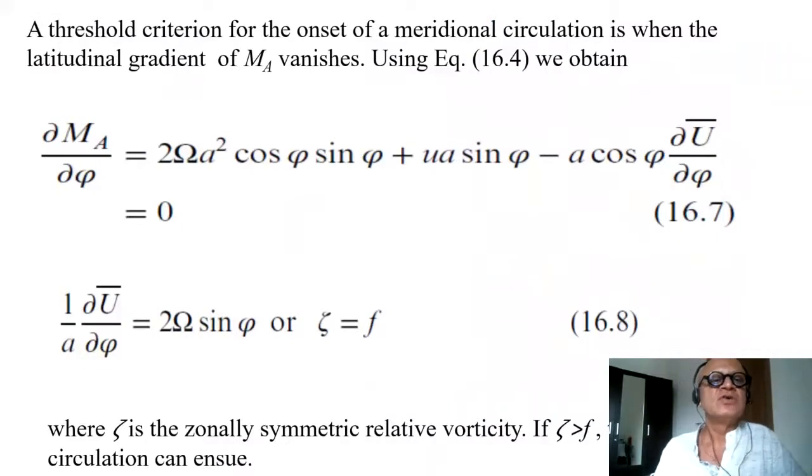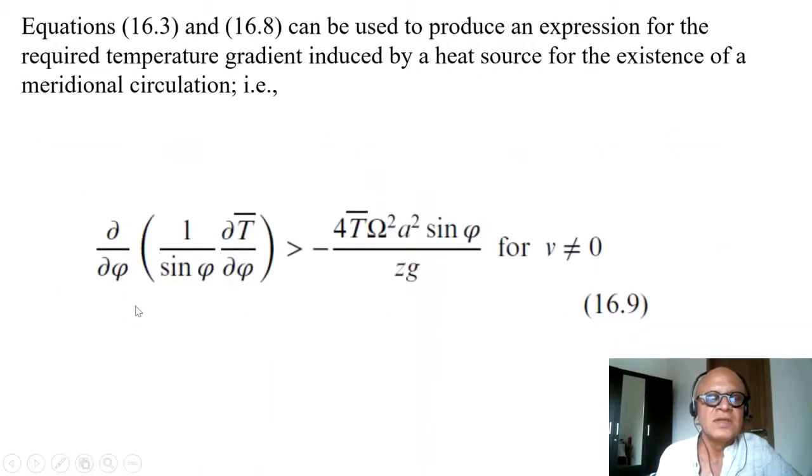To look for the threshold criterion for the onset of this meridional circulation, we look for the vanishing of the latitudinal gradient of Ma. So ∂Ma/∂φ is written as 2Ωa²cos φ sin φ + ua sin φ minus—these are the spherical coordinate geometric terms which we'll ignore—minus a cos φ ∂u̅/∂φ, the horizontal shear. For the gradient to vanish, this has to go to 0. Ignoring that term, we end up with 1/a ∂u̅/∂φ equal to 2Ω sin φ.